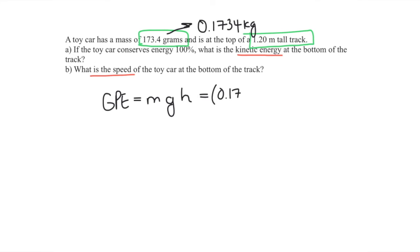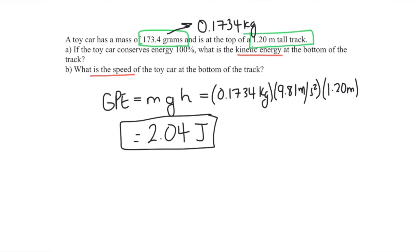We have the mass now in the right unit. That lowercase g is a constant—it's the acceleration due to gravity which is 9.81 meters per second squared—and then we have the height which is 1.20 meters. We multiply all this together and we end up with 2.04 joules. The unit of energy is joules.